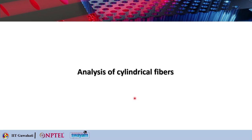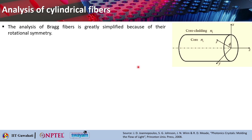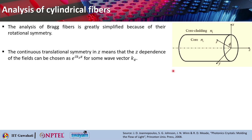Now we will do the analysis of cylindrical fibers. To analyze the Bragg fiber, you can actually take help of the rotational symmetry. Here you can see that the fiber axis can be marked: this is x, this is y and this is z. But then for a cylindrical fiber, you can also use the cylindrical coordinate system — this is r, this is the azimuthal angle phi, and this is z.